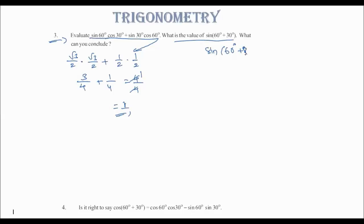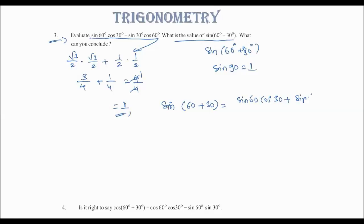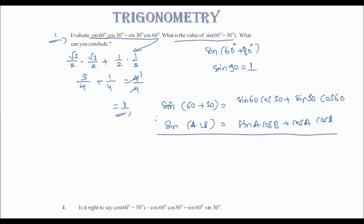We have to find the value of sin(60+30). sin(60+30) = sin90 = 1. We can also write it using the formula: sin(A+B) = sinA·cosB + cosA·sinB. Substituting, sin60·cos30 + sin30·cos60, and both sides are equal to 1. This is a very important formula to remember.